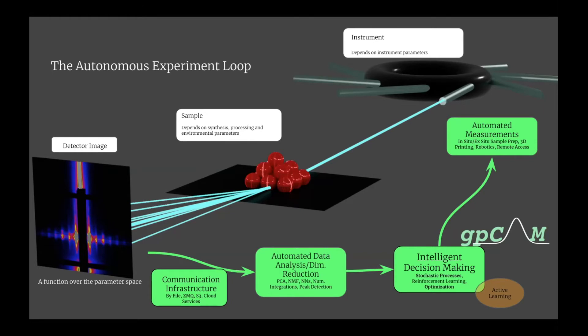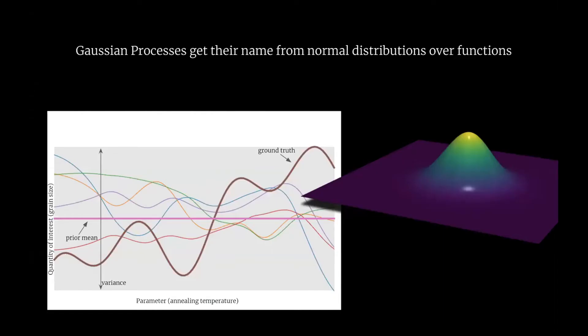I want to especially talk about using Gaussian processes for the intelligent decision-making. We have developed a tool, gpCAM, that is available to all of you. In the next few slides, I want to explain at a really high level what Gaussian processes actually do and how they help in this autonomous loop.